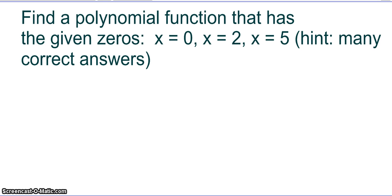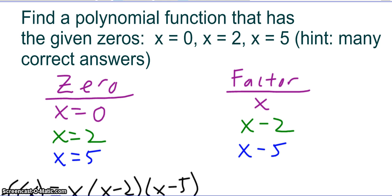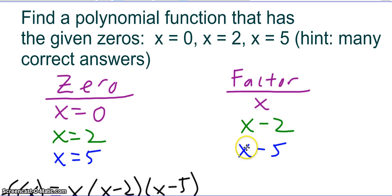Pause the video and come up with an answer — there are many correct answers. The really key thing to understand is that if x equals 0 is a zero, then x is a factor. If x equals 2 is a zero, then x minus 2 is a factor. And if x equals 5 is a zero, then x minus 5 is a factor.